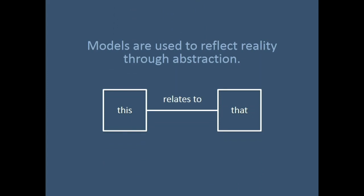I'll talk about four modeling activities. Models are basically used to reflect reality through abstraction — something relates to something else. Models are very powerful; without models we wouldn't have math, we wouldn't have modern science, we wouldn't have the ability to create buildings and bridges, or even the internet. As information architects we use many types of models to help make sense of the environments that we're trying to design for.